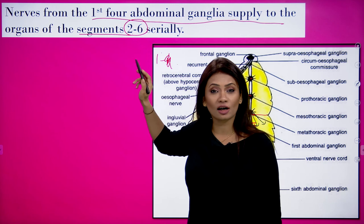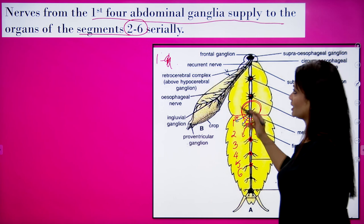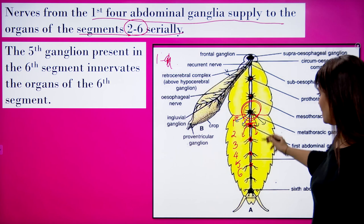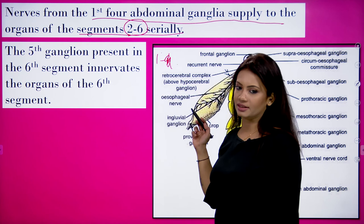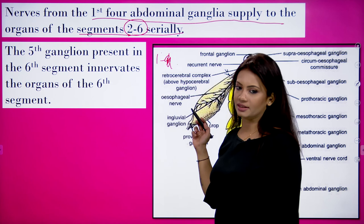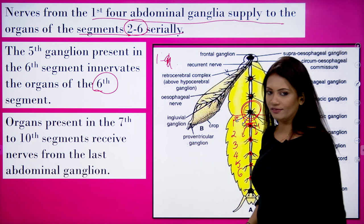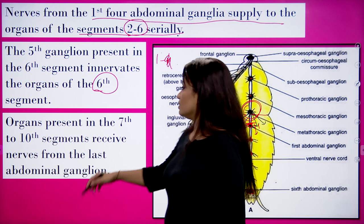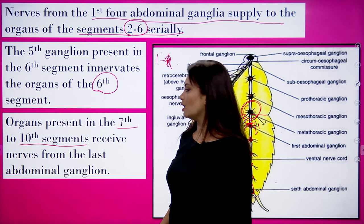The first abdominal segment is taken care of by the metathoracic ganglia. Segments two to six are taken care of by the first four abdominal ganglia. The fifth ganglion, present in the sixth segment, takes care of segment six. The last and largest ganglion, present in the seventh segment, takes care of the organs in segments seven through ten.